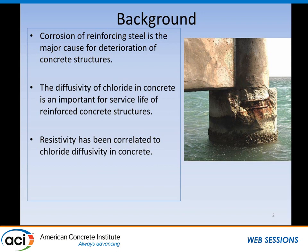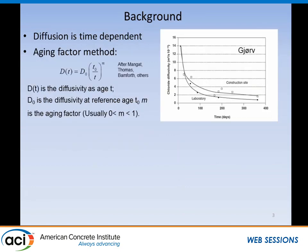We know that diffusivity through the concrete is an important factor to determine the service life — how long it's going to take before corrosion initiates. Based on past research, both FDOT and other places, the resistivity has been correlated with the chloride diffusivity in concrete. I'm going to present results on how the resistivity changes as a function of time, and also introduce the idea that resistivity can be used to calculate the aging factor.